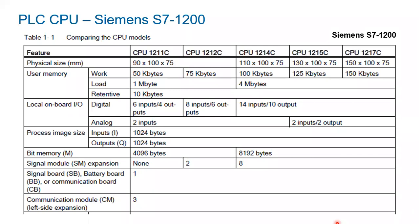The Siemens S7-1200 is one of the PLCs we have in our lab. When you choose the S7-1200, know that there are about five different flavors: the 1211C, 1212, 1214, 1215, and 1217. Each has various options — the 1211 has 50 kilobytes of work memory, then 75, 100, 125, 150. So it's not just knowing this is the right family, but also looking deeper to pick the right CPU version that fits your needs.